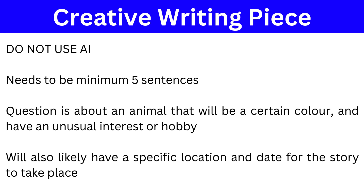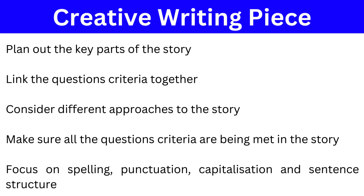Then there is the creative writing question. It only has to be between five and seven sentences, however you can do more if you need to, so the story doesn't have to be very long at all. Do not use AI to answer this question as you will fail the assessment if you do. This question will typically be about an animal that is a certain colour and has an unusual interest or hobby. The question may also specify a location and date for the story to take place. I would strongly advise that you take some time to plan out your story and link together the various criteria — for example, if the story asks for a red dog that likes to play computer games, is the dog not very good at computer games and gets angry because of this, which over time has turned him red? If you can link different parts of the story together it will create a better piece.